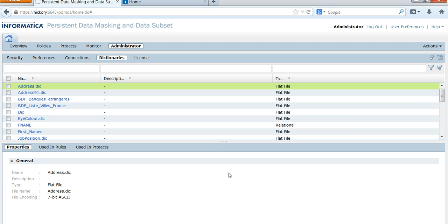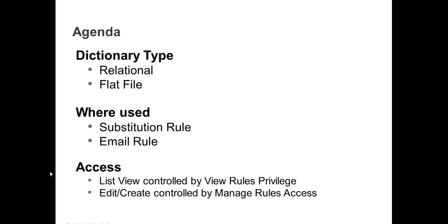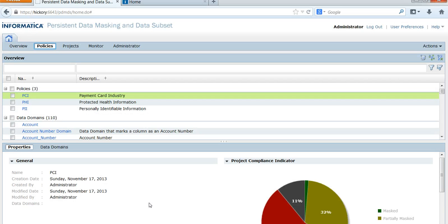Where are these dictionary files used? These dictionary files are used in substitution rule masking and also in the email rule, where we mask the first name and last name, append both names, and add a domain name to generate an email ID. I'm going to show you a sample substitution rule where you can choose the dictionary file.